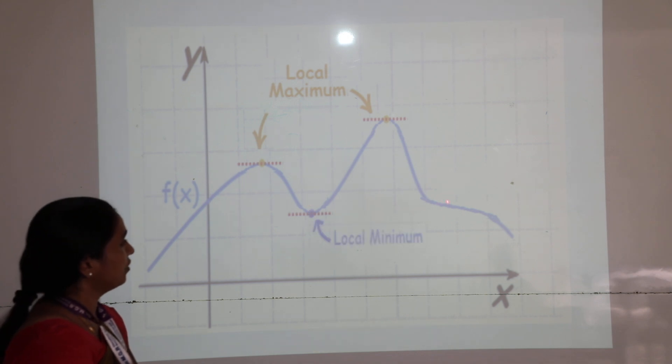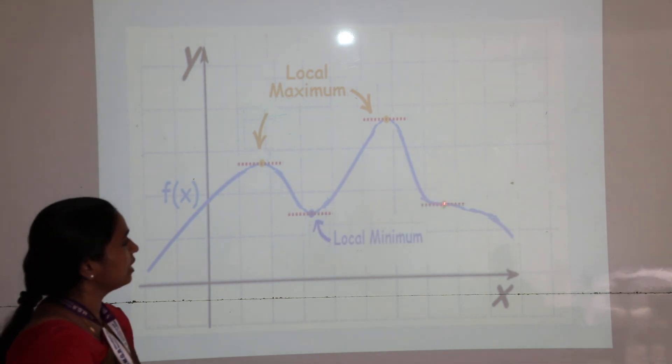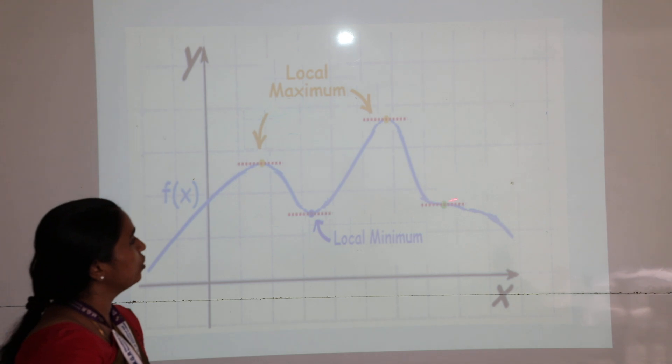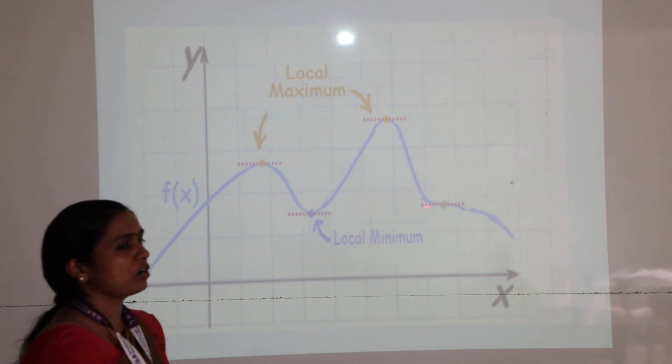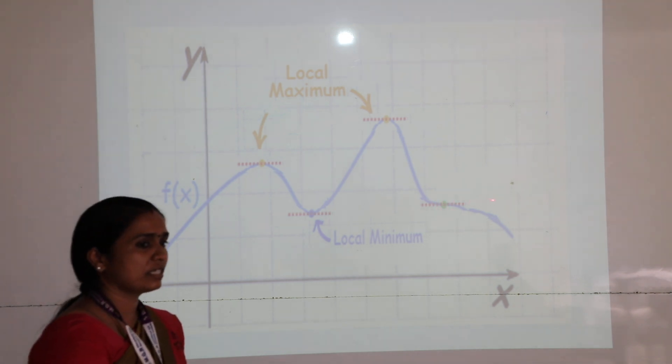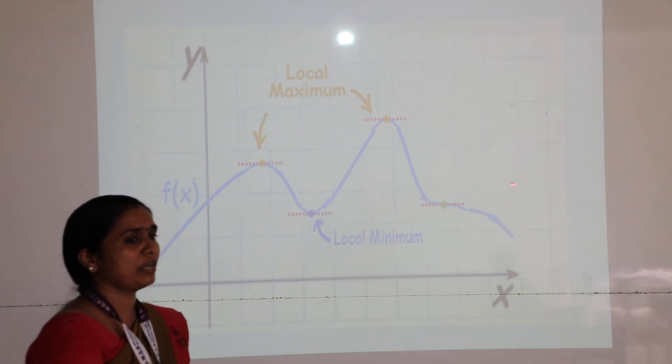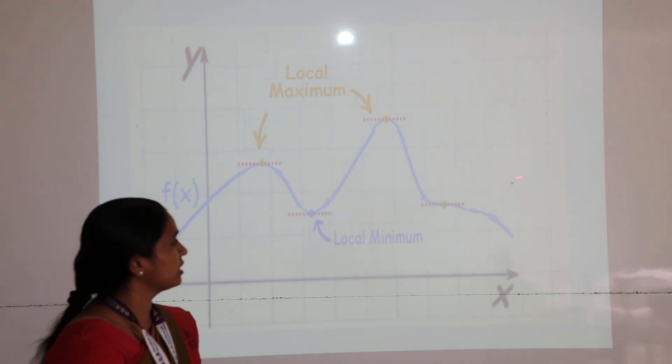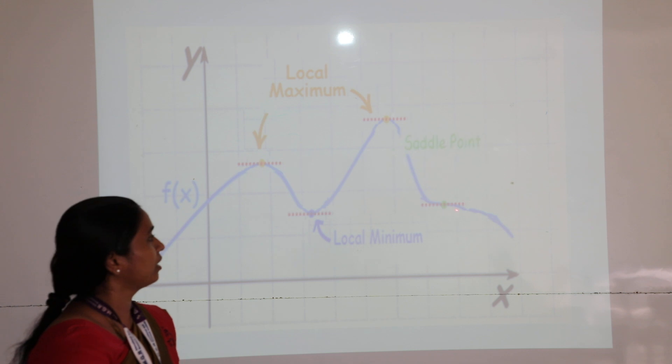Here at this point, if you have taken this point, you see there is no change. We cannot say that it is a maximum or minimum. So it is called a stationary point of inflection.